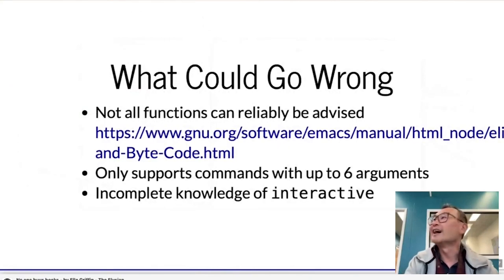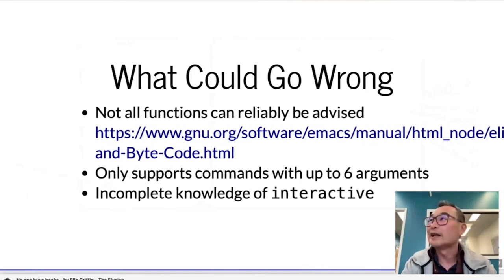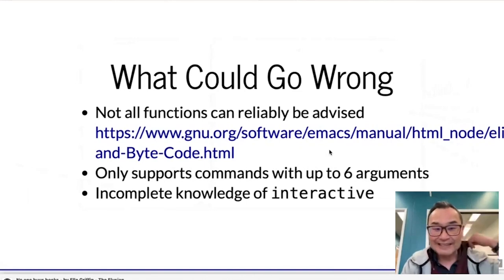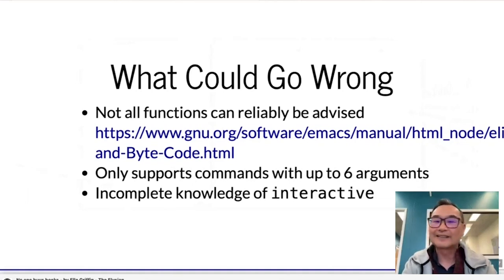So what could go wrong? Not all functions can be reliably advised. There's a section in the Emacs manual describing that functions which are byte-code compiled or optimized generally cannot be advised — I've sent that link in the chat. Also, with my brute-force stub function I only provided support up to six arguments. My knowledge of interactive is also incomplete — there are some functions I could not stub away, and I have no idea why, but I'm happy to get guidance on that.